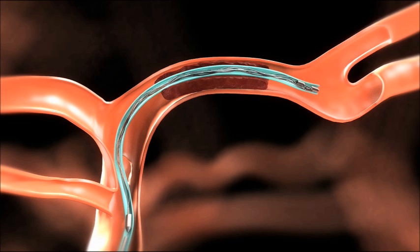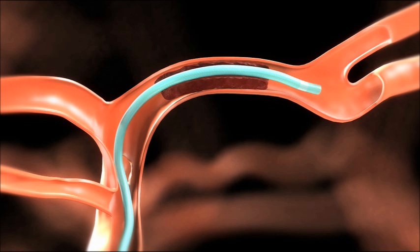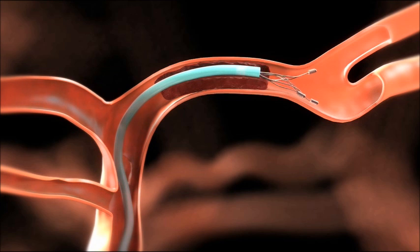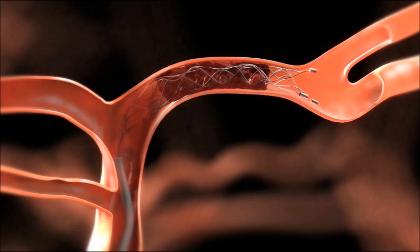To deploy the solitaire FR, loosen the RHV. Then carefully withdraw the microcatheter while holding the solitaire FR in place until the microcatheter tip covers only the proximal marker of the device.